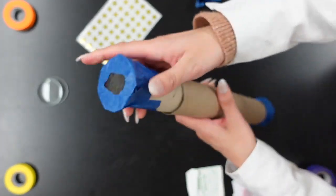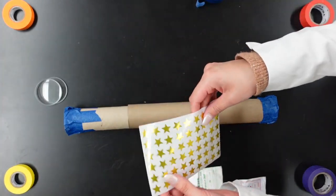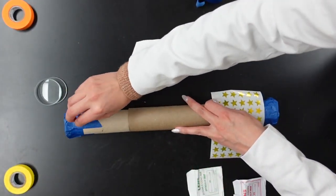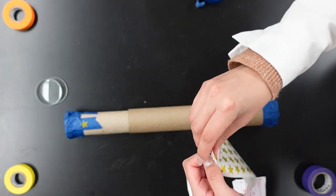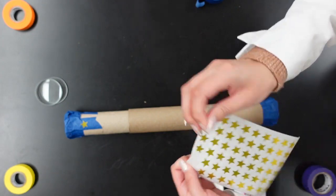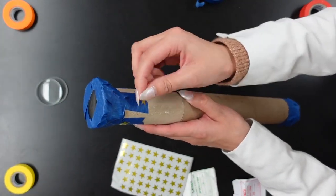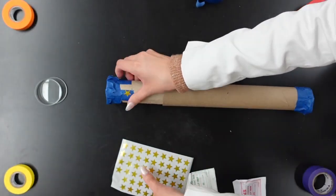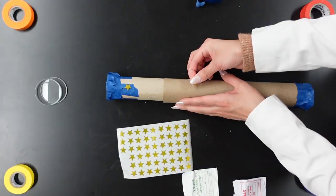And last but not least is to make it your own. I love stickers. So I'm going to put some stickers on my telescope. You can always use paints. Again, just make sure that you're not covering up any of the visibility on the lenses, but you can decorate it any way you like. You can use crayons, you can use paint. Markers are also a great option.